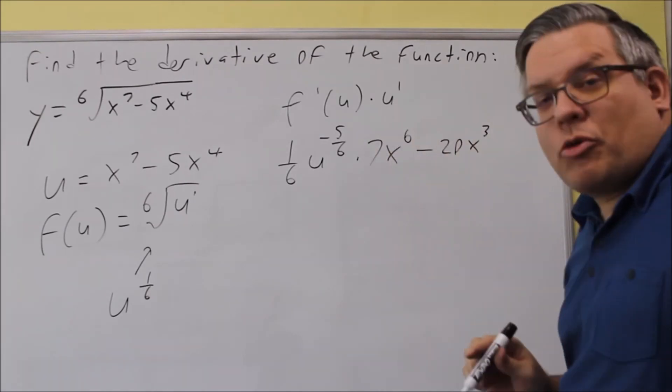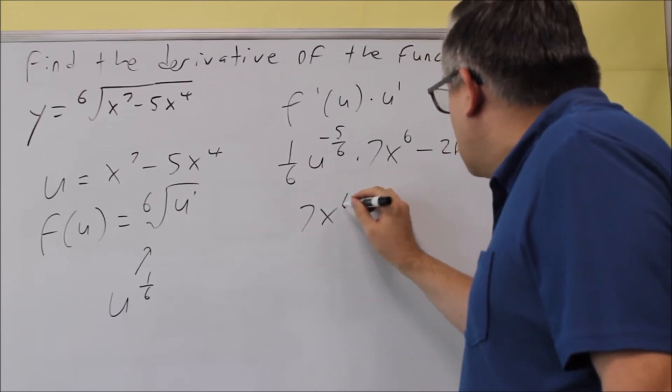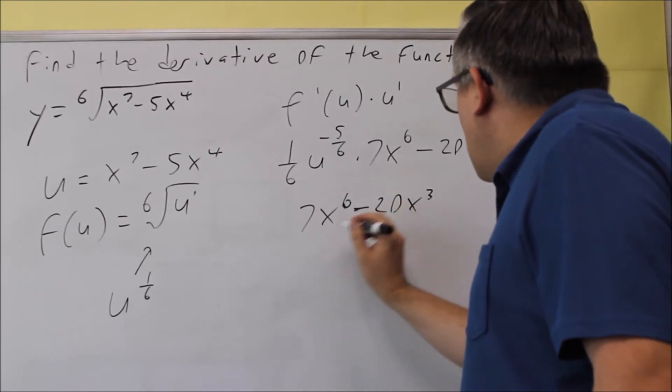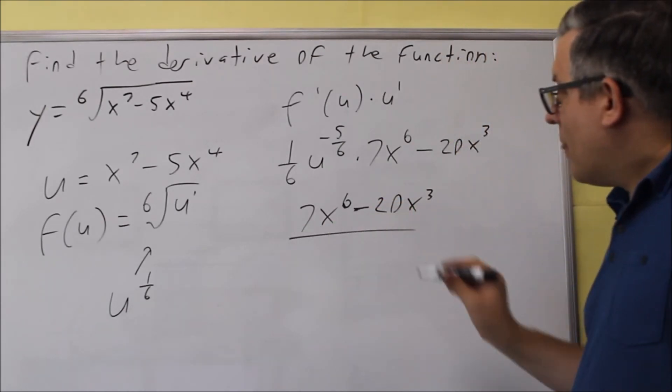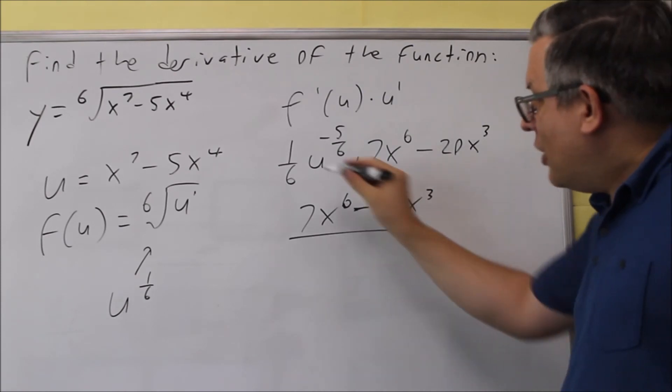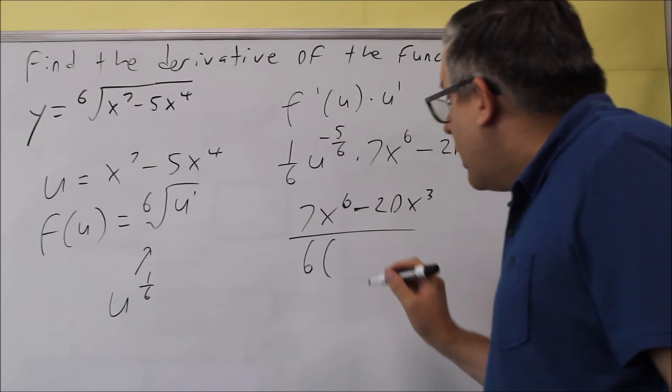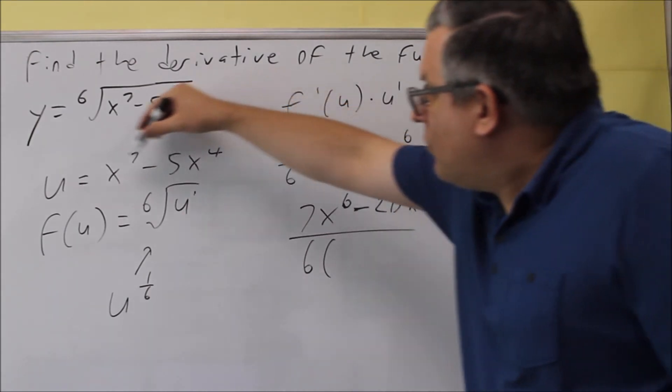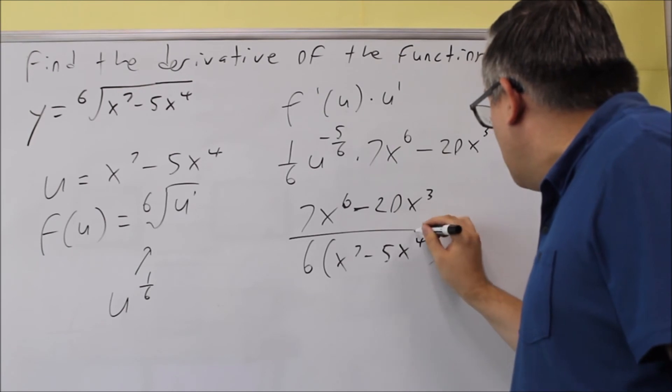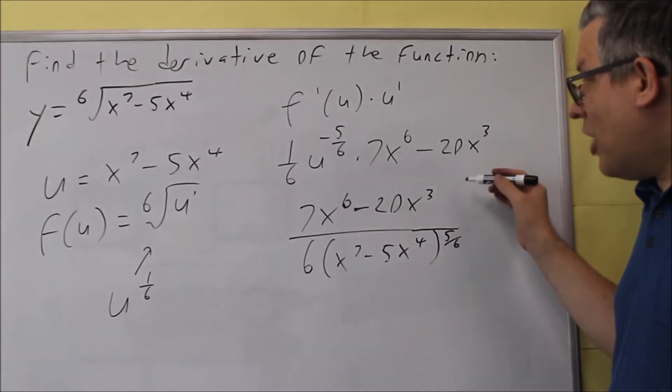So now we have this, we just want to rewrite it. On top we have 7x to the sixth minus 20x cubed. And then we're going to divide that. The u to the five-sixths is going to go on the bottom, and the six is going to go on the bottom as well. Now I'm going to replace the u with our original: x to the seventh minus 5x to the fourth, and that's being raised to the positive five-sixths power.